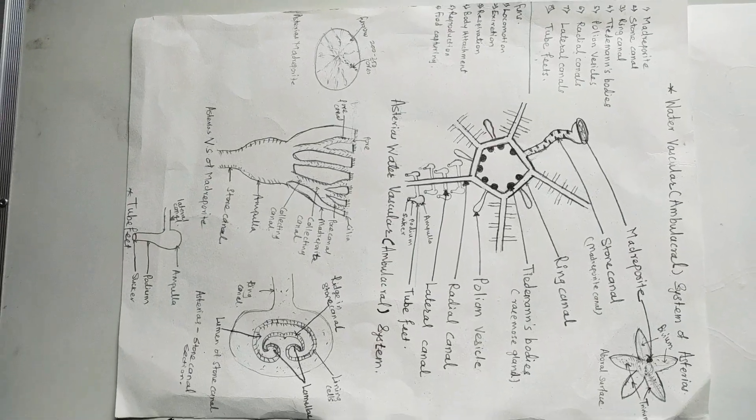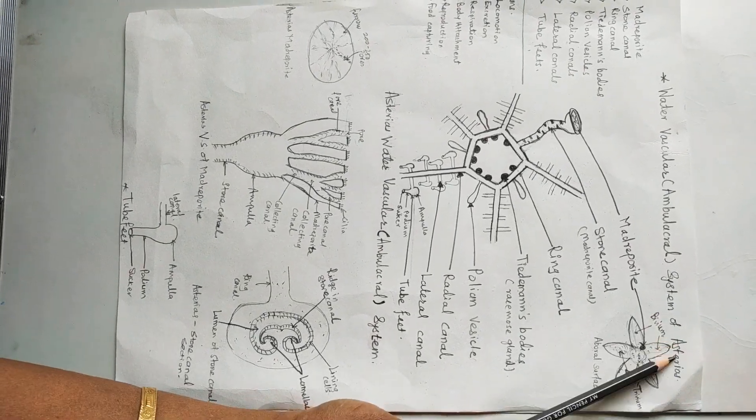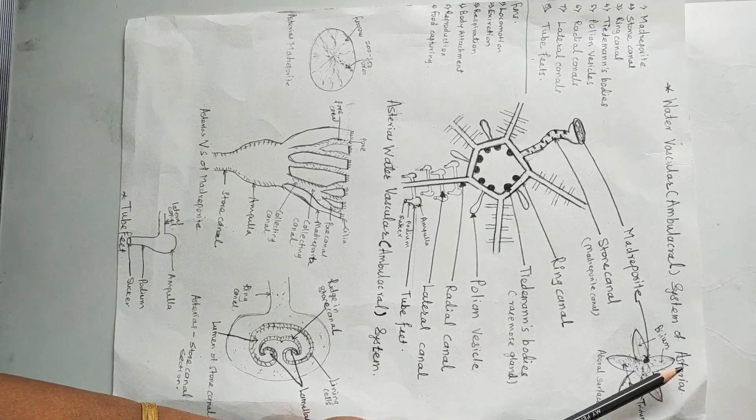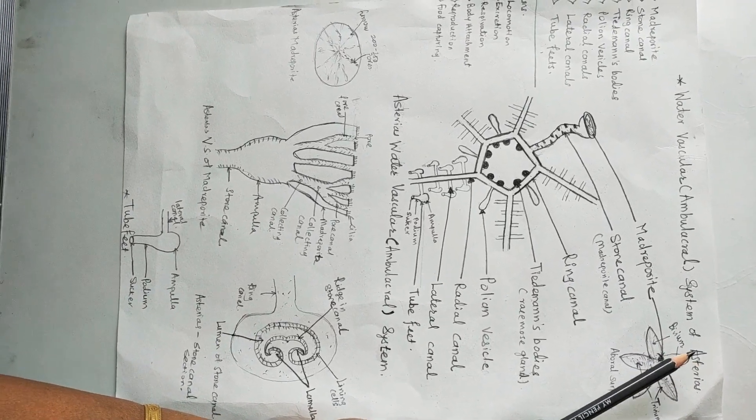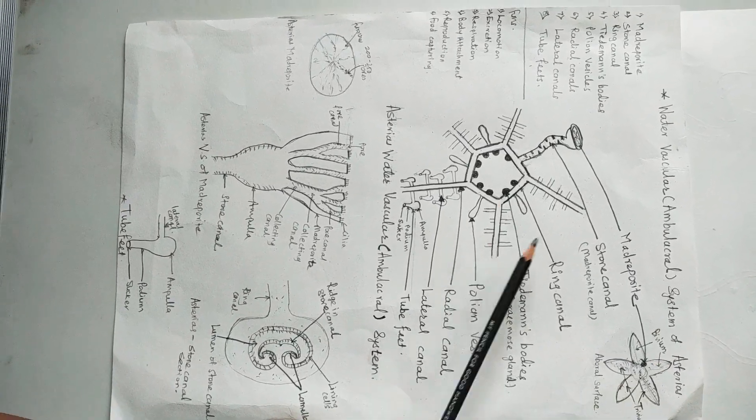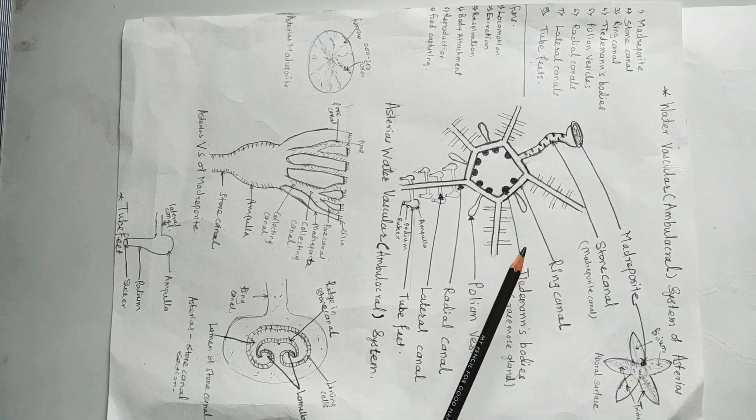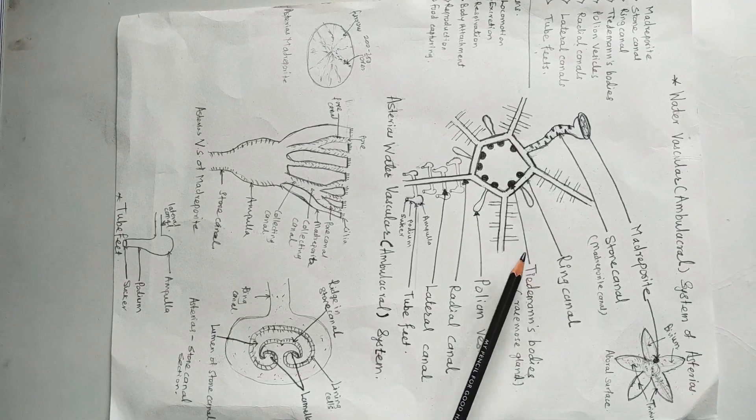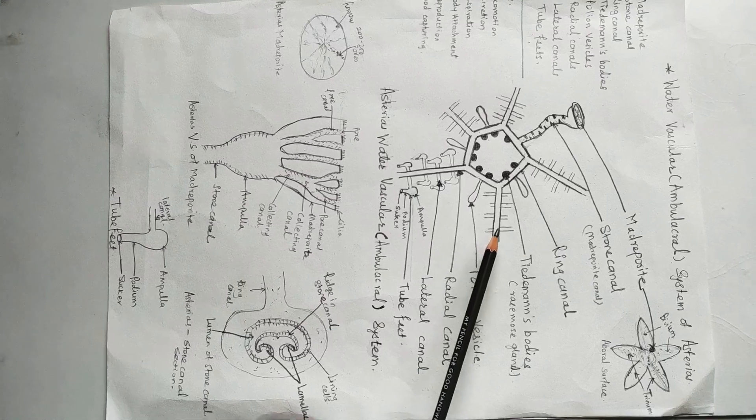We will study about the water vascular or ambulacral system of Asterias. Asterias is from the phylum Echinodermata. Presence of water vascular system is the unique feature of anatomy of all echinoderms. It is derived from the coelom from which it separates during the development of the animal. Thus, it is a modified part of the coelom.